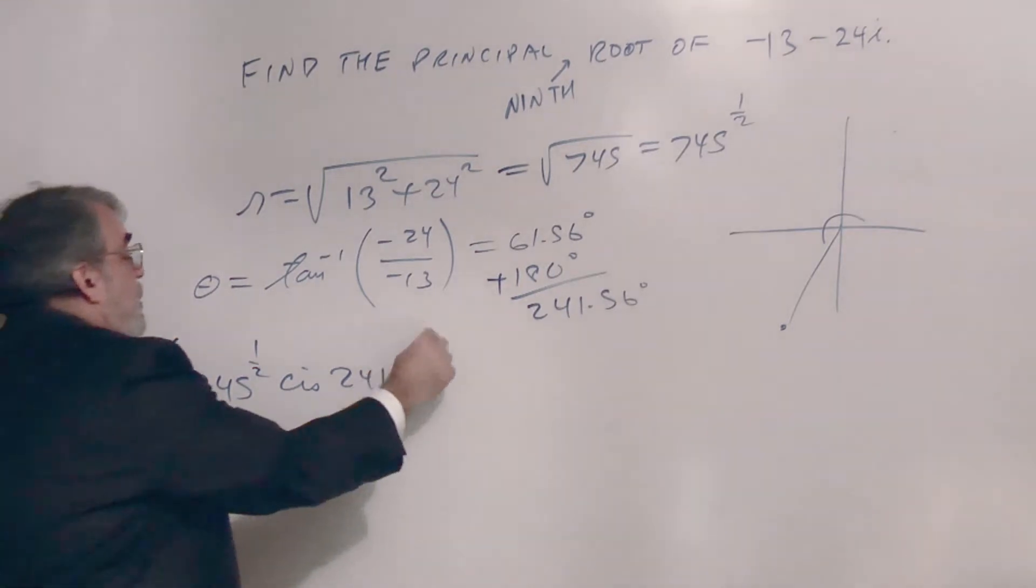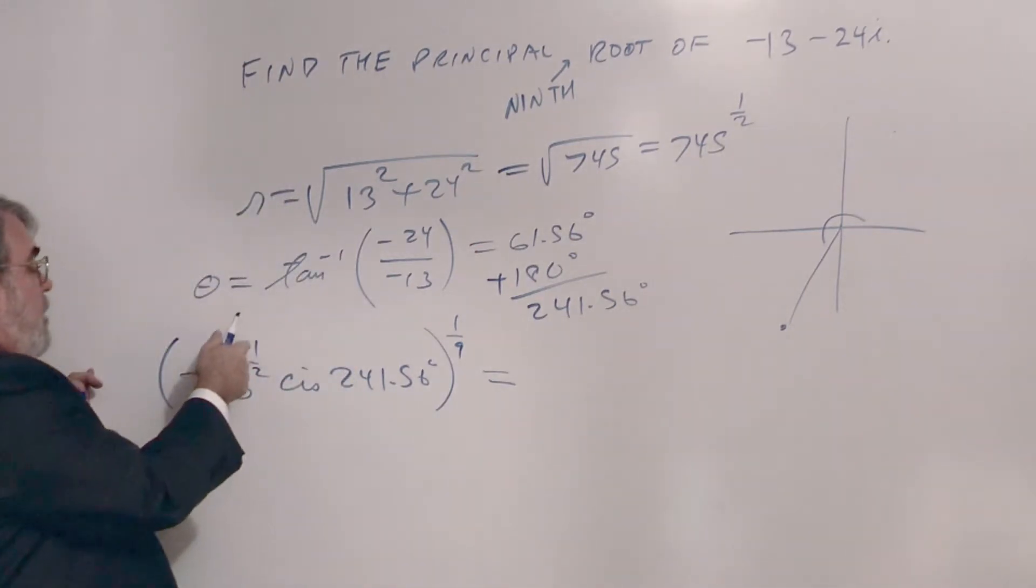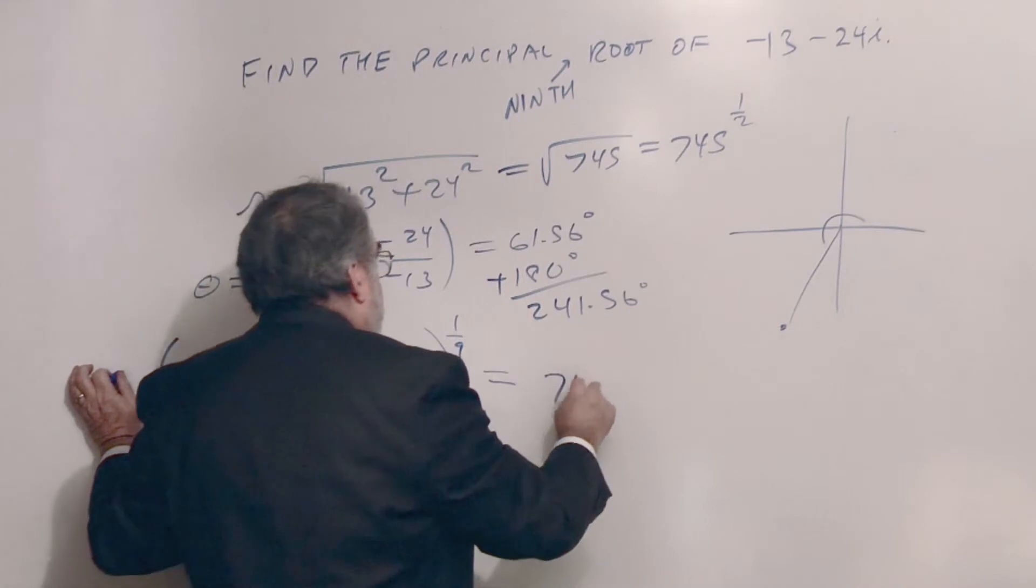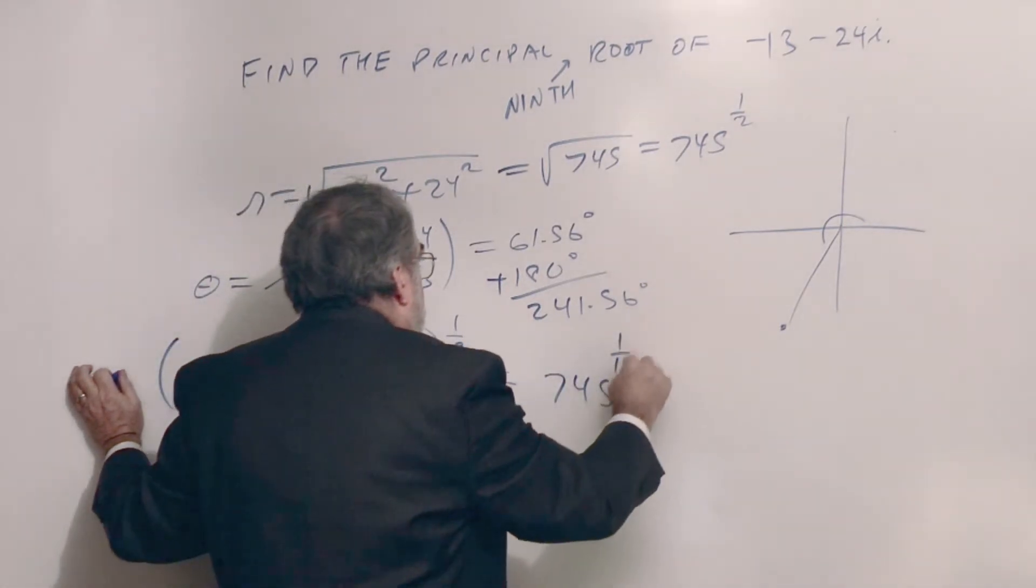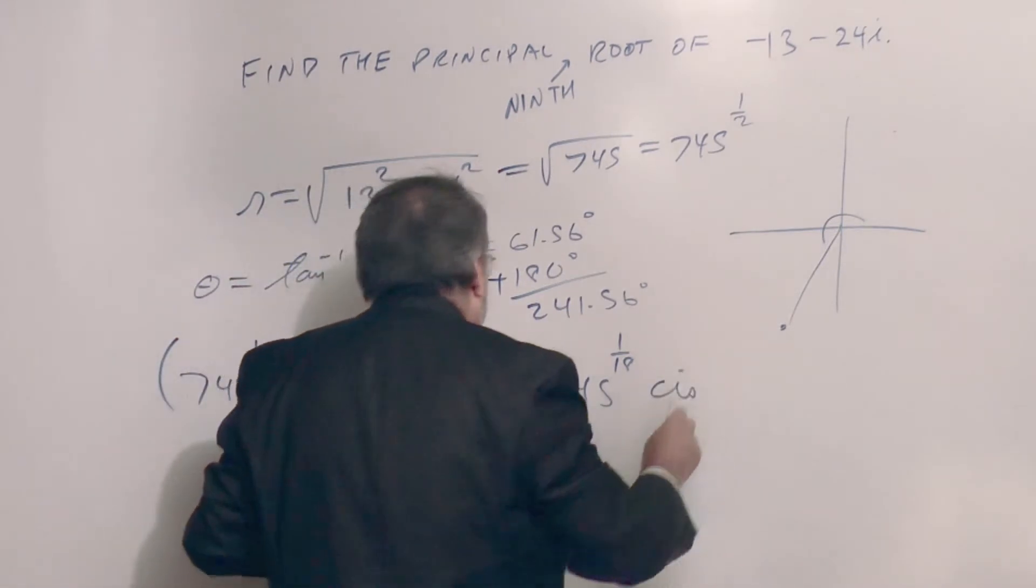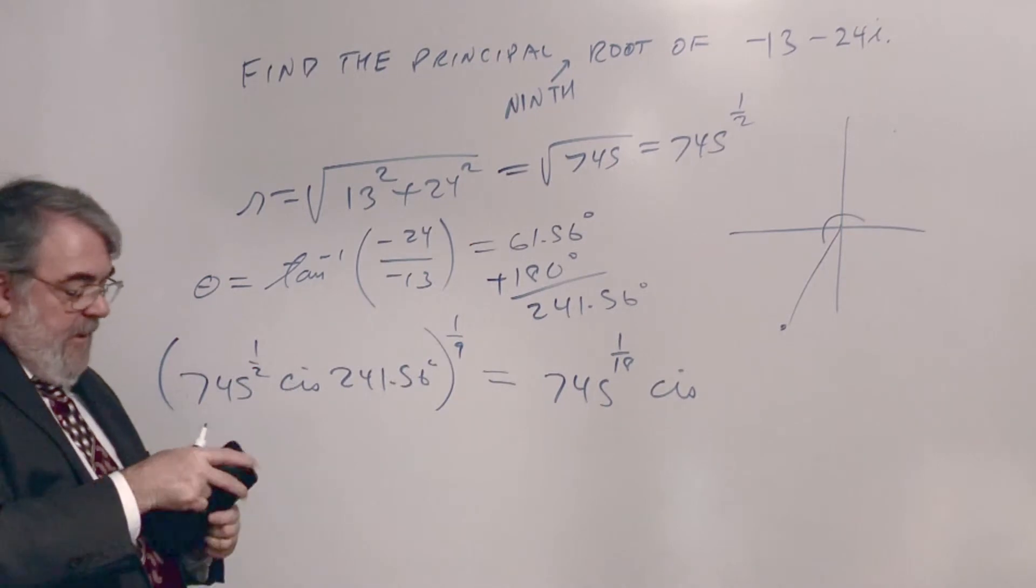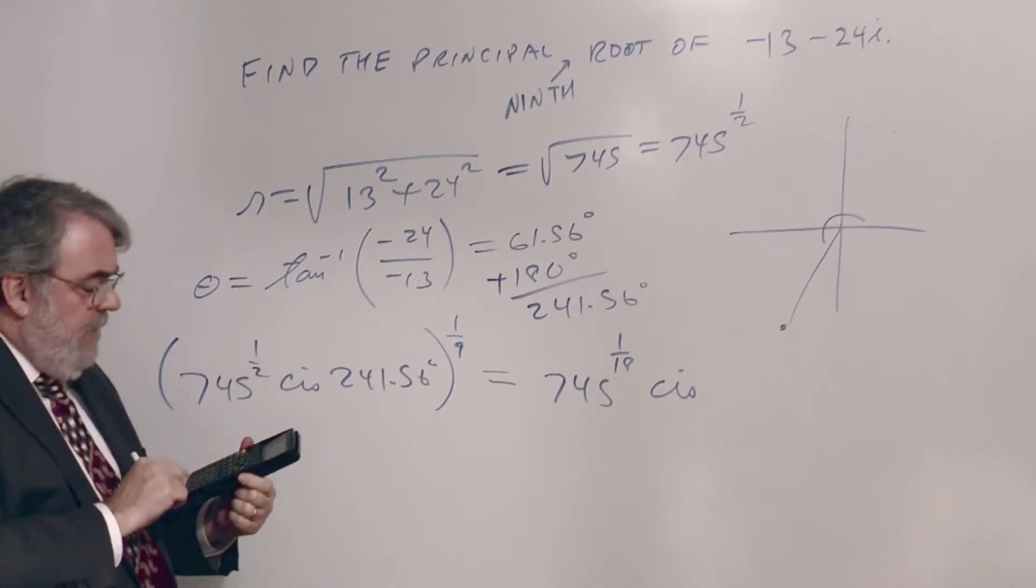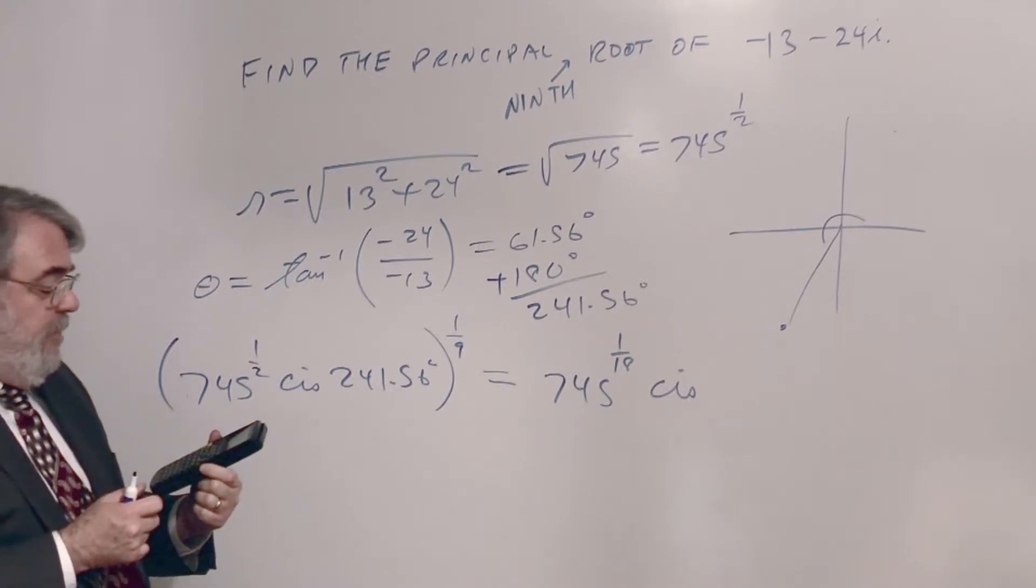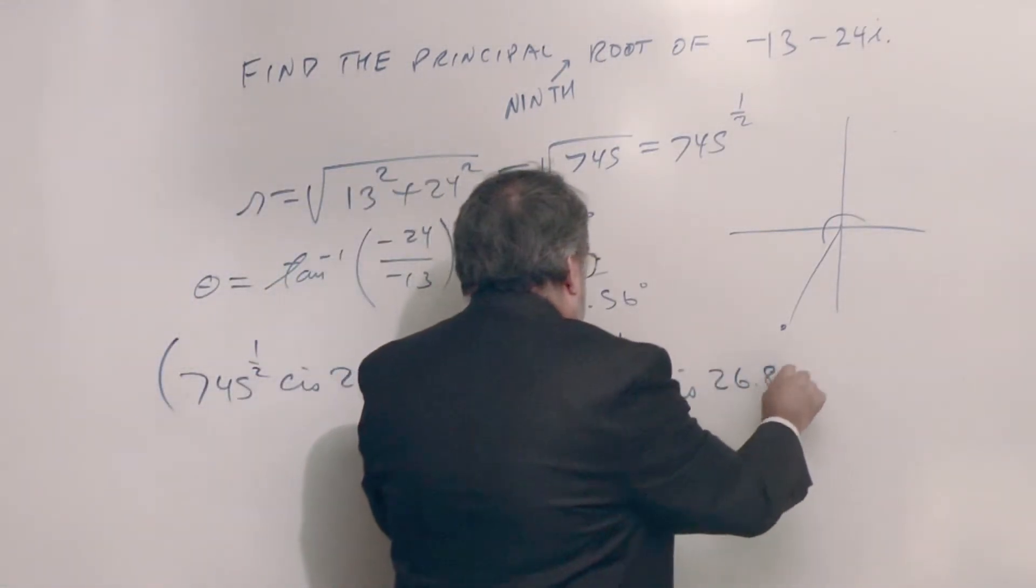And I'm going to take the 1/9th root. So 1/2 times 1/9 is 1/18. I have 745 to the 1/18th power, and then CIS - and then we have to divide this angle by 9, divide by 9, so divide by 9 - and I'm going to store that. 26.84 degrees, 26.84 degrees.